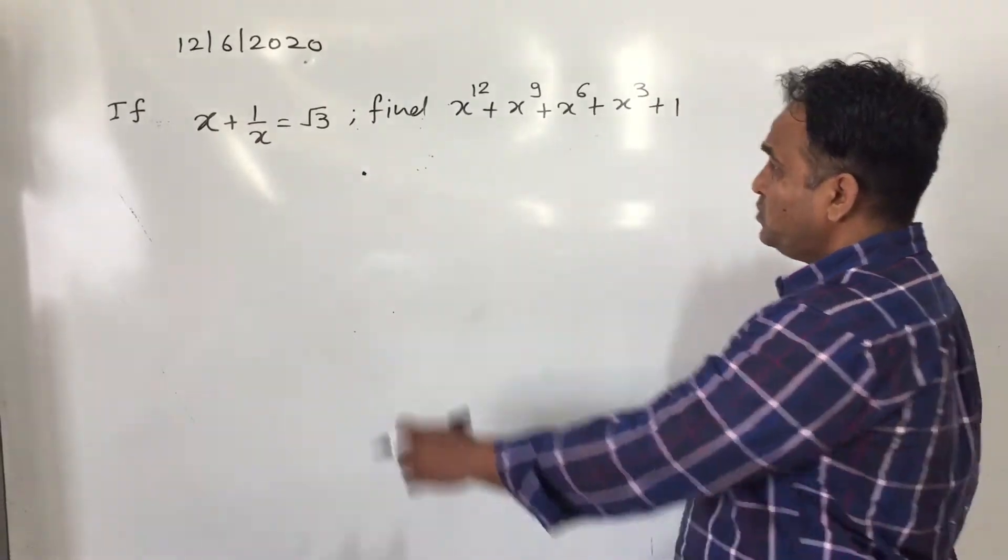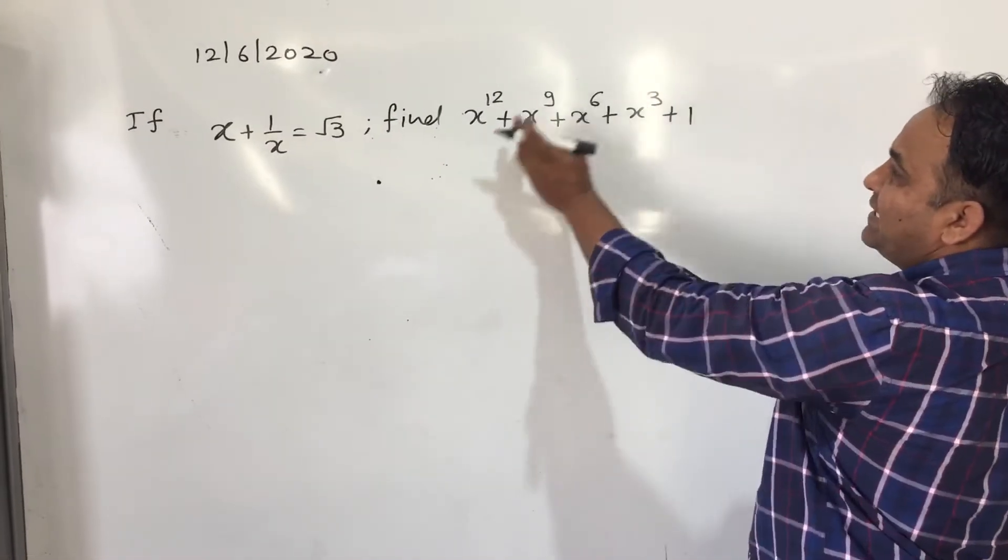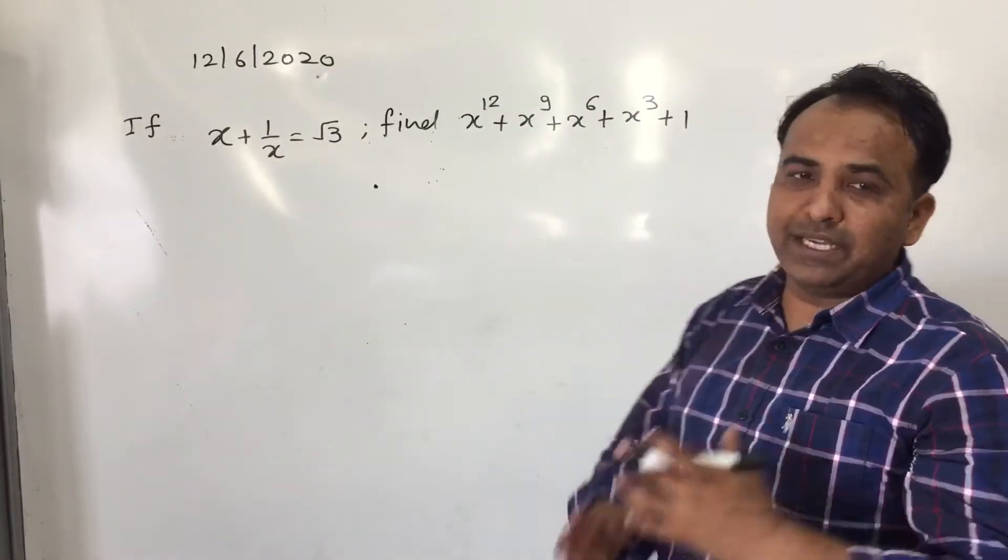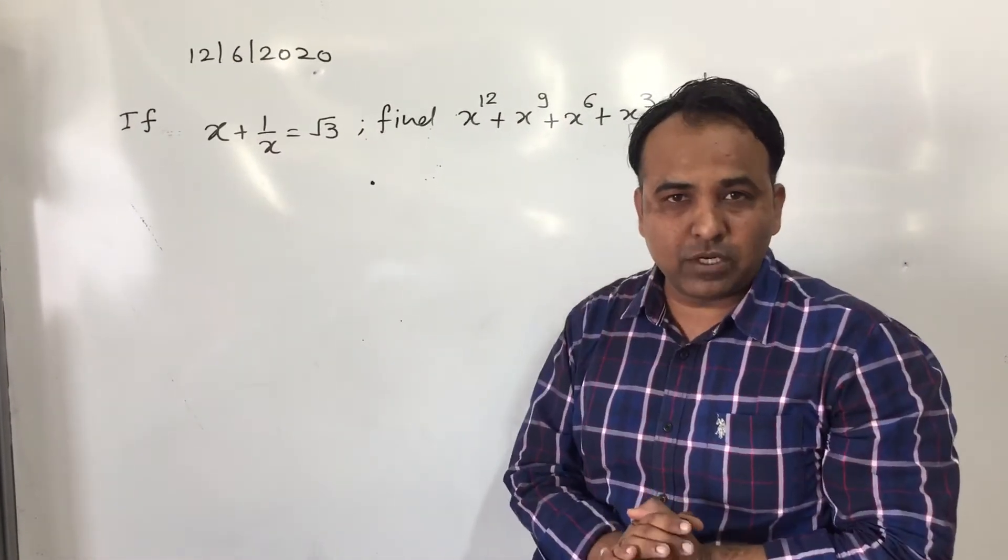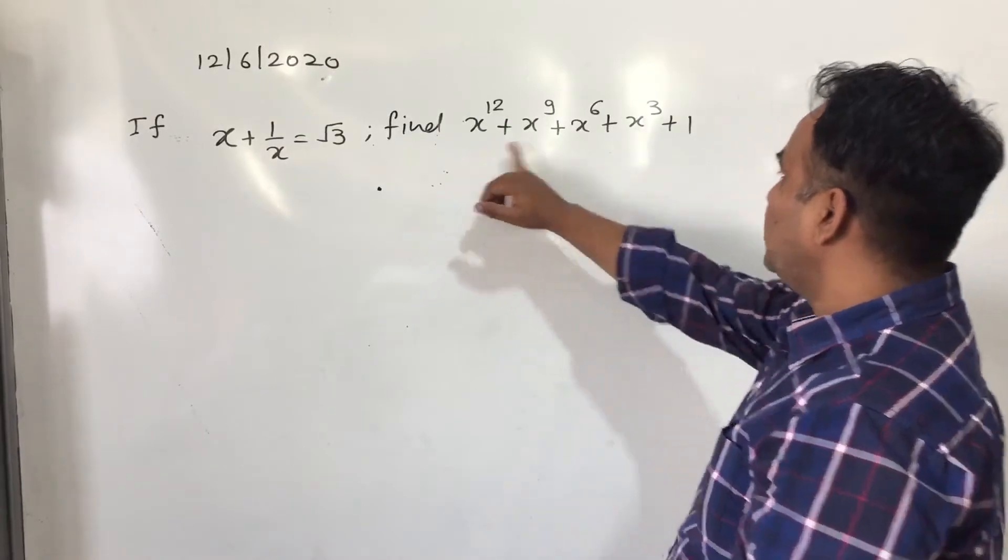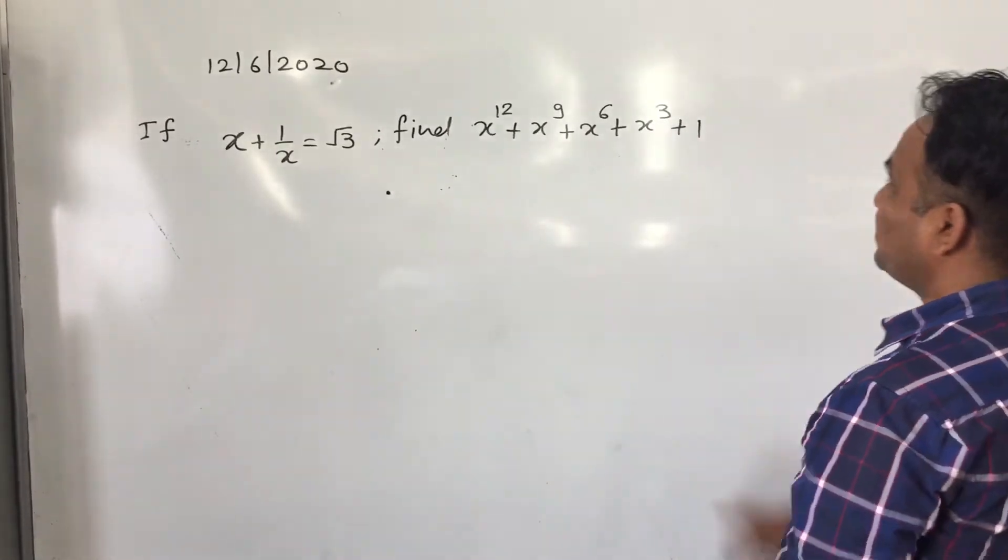Now student, this is very complex. Don't go for any identity because x to the power 12 is quite big as a power. So first of all, try to factorize, try to simplify this expression.